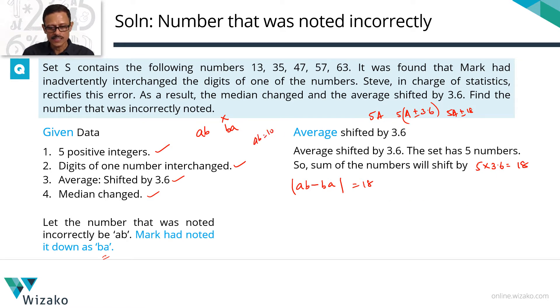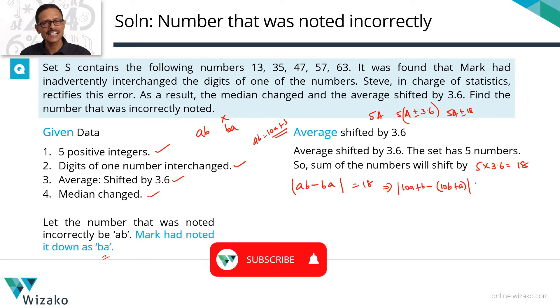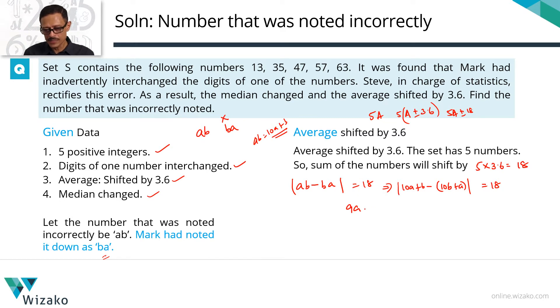We know any AB can be written as 10A plus B, giving weights to its place weight. So this AB can be written as modulus of 10A plus B minus BA can be written as 10B plus A. This is equal to 18. 10A minus A is 9A. B minus 10B is minus 9B. So modulus of 9A minus 9B equals 18. Take 9 common outside, divide both sides by 9. So what we are left with is modulus of A minus B is equal to 2.